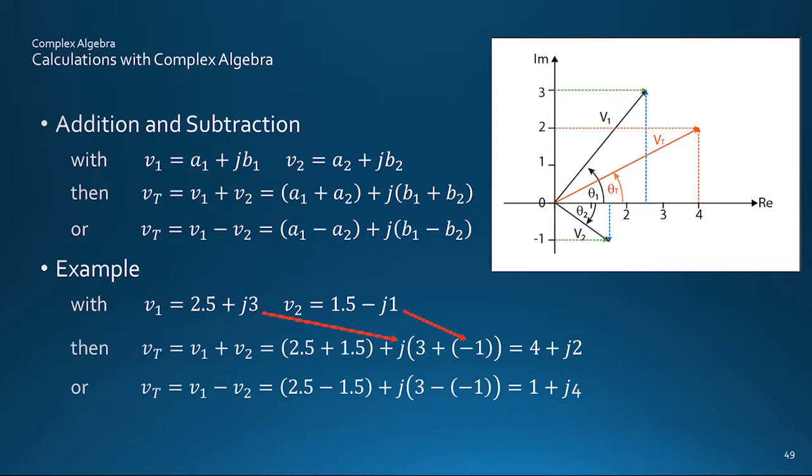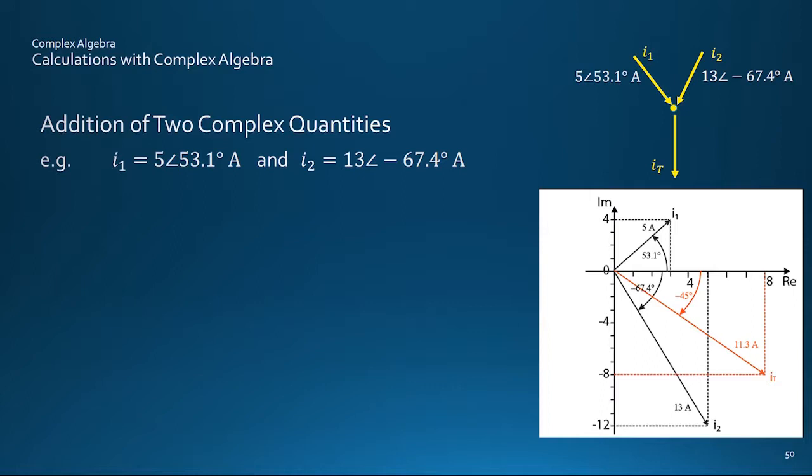This is another quick example of adding together circuit variables. In this case, the currents i1 and i2 here in polar form. i1 has a magnitude of 5 amps and a leading phase angle of 53.1 degrees, while i2 is 13 amps, which has a lagging phase angle of minus 67.4 degrees. The first thing to do is to convert both into Cartesian form using the cosine and sine formulae to get 3 plus j4 and 5 minus j12 respectively.